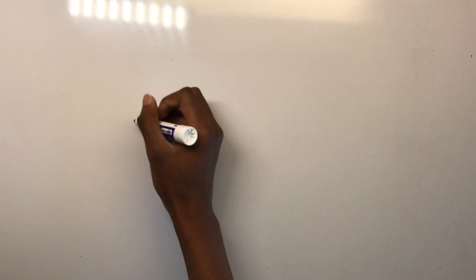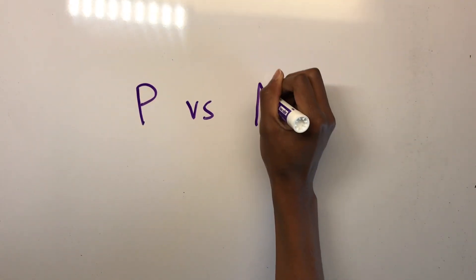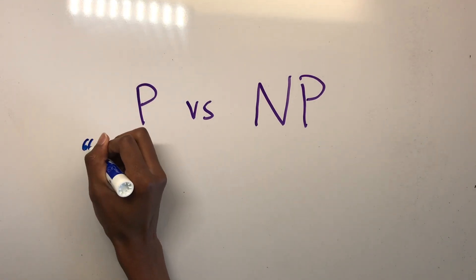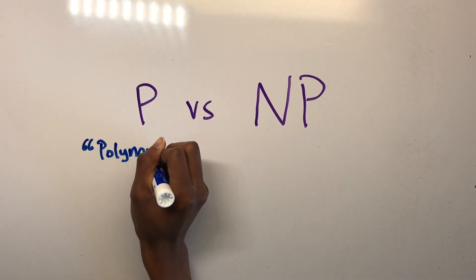So what makes the traveling salesman so hard? You may have heard me use this term earlier, but it has a lot to do with the P versus NP problem. So what is the P versus NP problem?